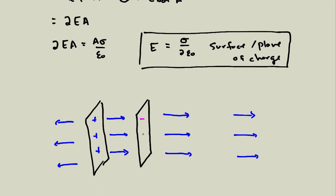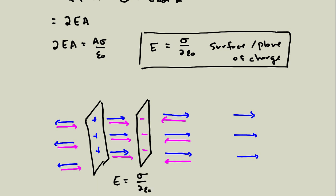On the second plane we had negative charges, and because the electric field points towards negative charges, the electric field for the negative plane points back toward it on both sides. Outside the two planes these electric fields cancel, giving basically no field, but in between they double. So the electric field between the plates is sigma over 2 epsilon naught plus sigma over 2 epsilon naught, giving sigma over epsilon naught — which is the formula I gave for a capacitor.